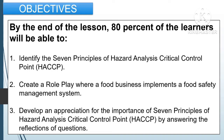By the end of the lesson, 80% of the learners will be able to: first, identify the 7 Principles of Hazard Analysis Critical Control Point; second, create a role play where a food business implements a food safety management system; and third, develop an appreciation for the importance of the 7 Principles of HACCP by answering the reflection questions.